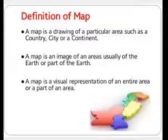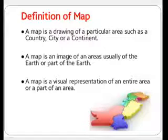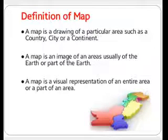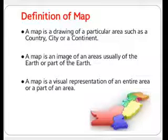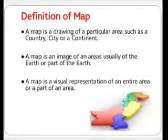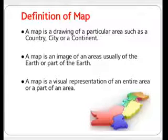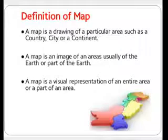Today our topic is the map of Pakistan. We will also learn about the provinces and capitals — how many provinces are there in Pakistan and what their capitals are. Now, the definitions of a map: a map is a drawing of a particular area such as a country, city, or continent. A map is an image of an area, usually of the earth. A map is a visual representation of an entire area or part of an area.